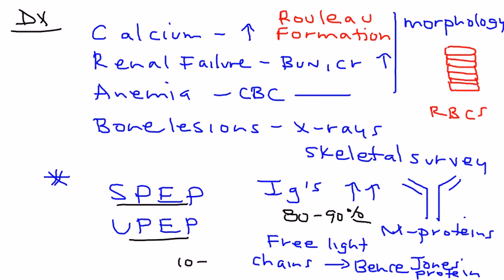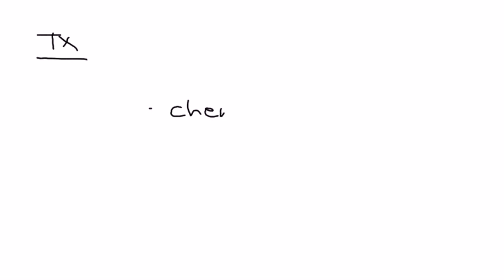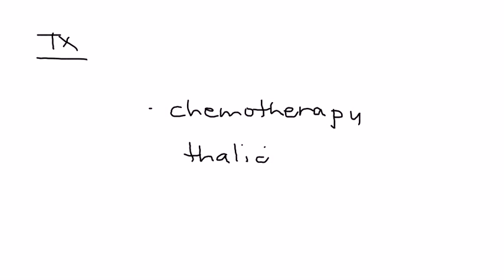Bence-Jones protein will probably be seen about 10 to 20% of the time. Treatment — since it's a cancer, the cornerstone of treatment is chemotherapy. Some of the chemotherapy agents used are thalidomide and bortezomib.